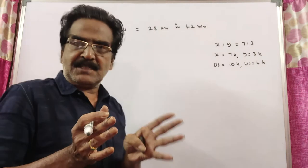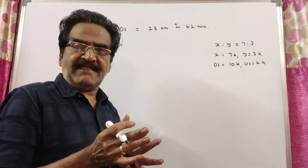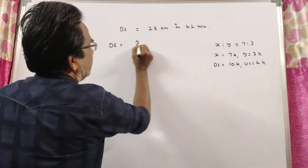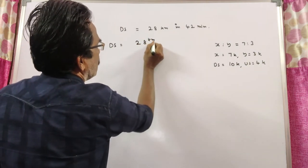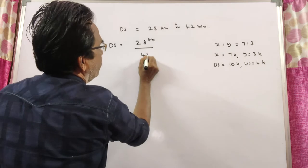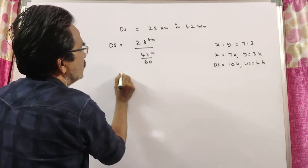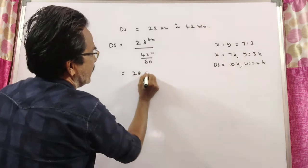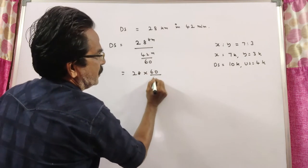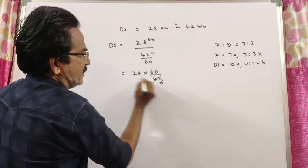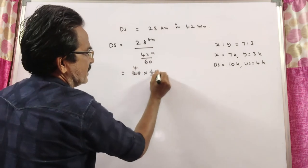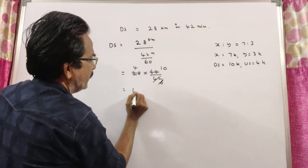Now let us find the downstream velocity. This boat travels 28 kilometers downstream in 42 minutes. 42 minutes means 42 by 60 hours. So downstream velocity is equal to 28 times 60 by 42. 7 into 6, 7 into 4, 6 into 1, 6 cancels. So 40 kilometers per hour.